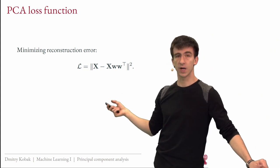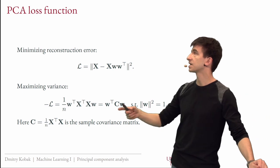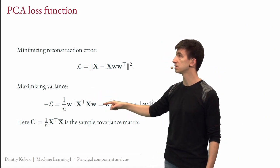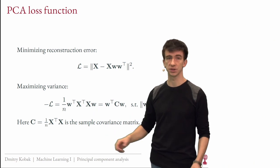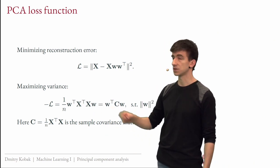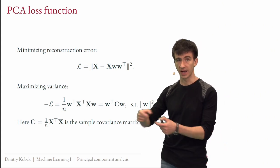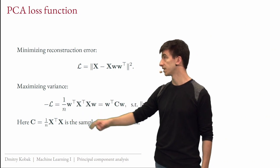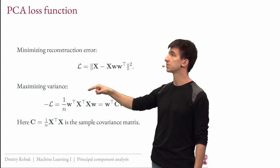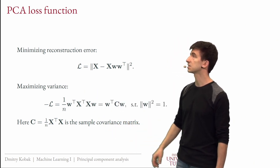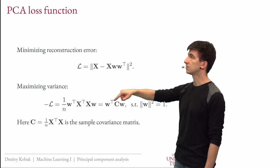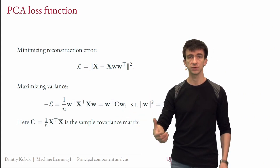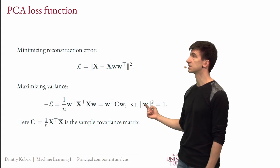For the maximizing variance objective: projecting gives xw as the new coordinates. Assuming centered features, variance is the squared values summed up — that's (xw)ᵀ(xw)/n, which gives wᵀ(xᵀx/n)w. The matrix xᵀx/n is the sample covariance matrix C. So the variance of the projection is wᵀCw, subject to w being a unit vector — otherwise w could grow infinitely to increase this value, so we constrain w to lie on the unit sphere.